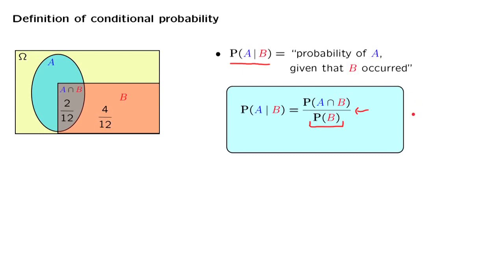So this formula, this definition, captures our intuition of what we did before to construct conditional probabilities in our particular example.